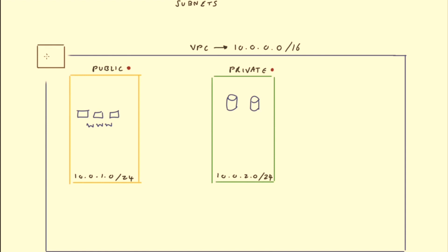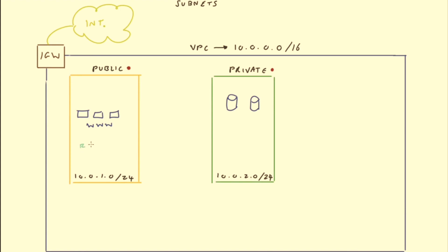Let's add in an internet gateway — IGW for internet gateway. Now we have our internet gateway attached to our VPC, and this internet gateway connects out to the internet. So we now have a bridge between our isolated VPC and the internet via the internet gateway, which is managed by AWS. You might think the public subnet now has access to the internet, but before it can, we need to add a route to the public subnet's route table.